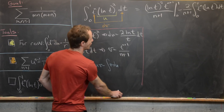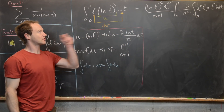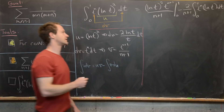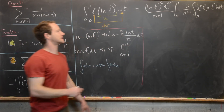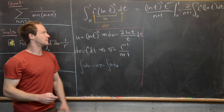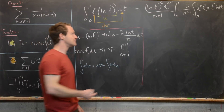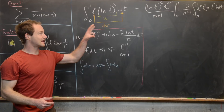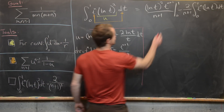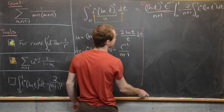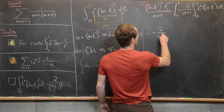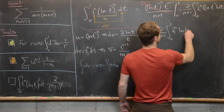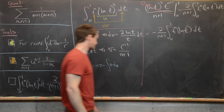Evaluating the boundary term at 1 gives the natural log of 1, which is 0. Evaluating at 0 is problematic since the natural log of 0 approaches minus infinity, but we can use L'Hôpital's rule to take the appropriate limit, which gives 0. So this whole boundary term is 0, and we're left with minus 2 over n plus 1 times the integral from 0 to 1 of t to the n times the natural log of t dt.